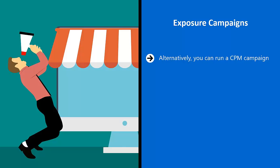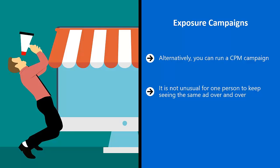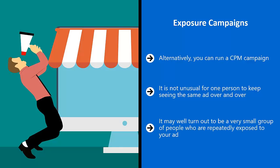Alternatively, you can run a CPM campaign — Facebook will charge you a certain amount of money for every thousand times your ad shows up. Please understand that impression campaigns can show the same ad to the same person more than once. It is not unusual for one person to keep seeing the same ad over and over. Depending on the time frame involved, that person might be counted more than once, so although you're paying for a thousand impressions, this doesn't mean a thousand different people have seen your ads.